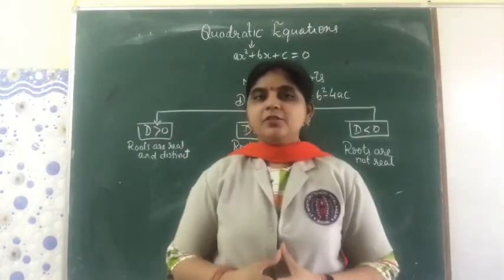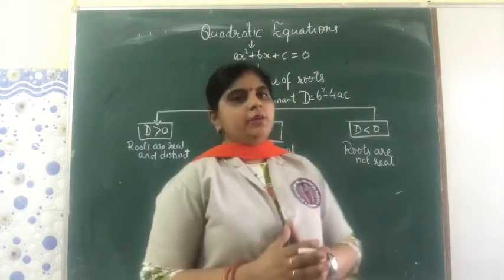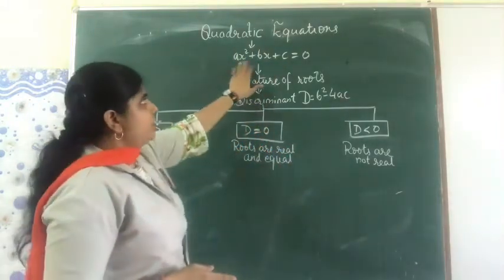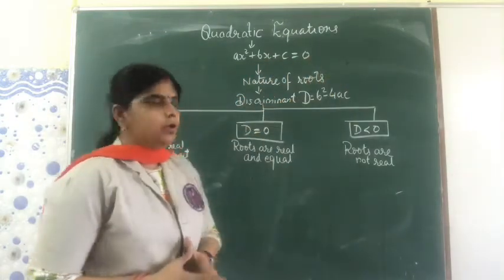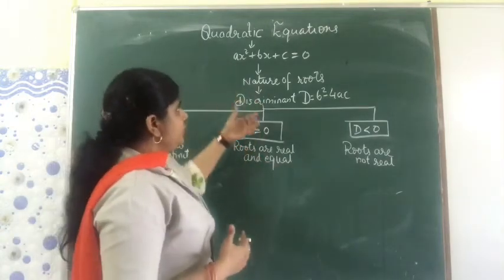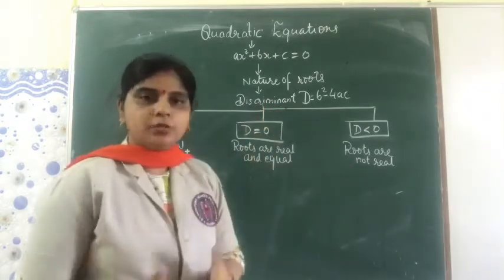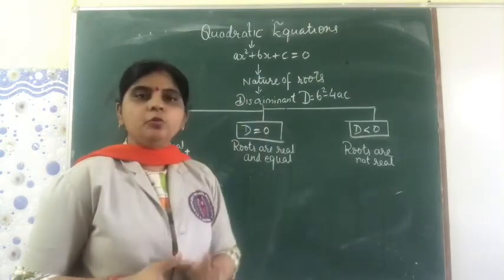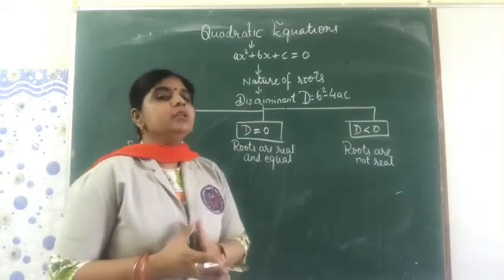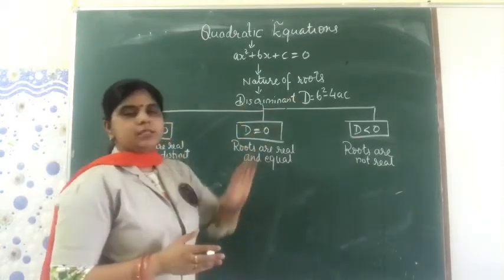Good morning dear students. Today in this video we are going to discuss about the nature of roots. We have already studied the chapter on quadratic equations — it is of the form ax² + bx + c = 0. Today we are going to see how, in this equation, finding out the discriminant helps us decide the nature of the roots. A quadratic equation has 2 roots because its degree is 2, and the nature of those roots can be decided by finding the discriminant.